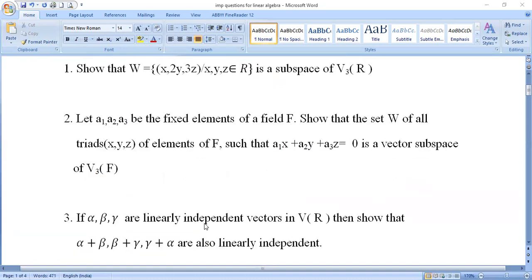Third question: If α, β, γ are linearly independent vectors in V(R), then show that α + β, β + γ, γ + α are also linearly independent.